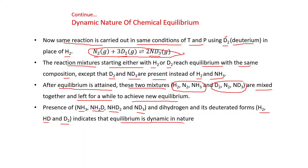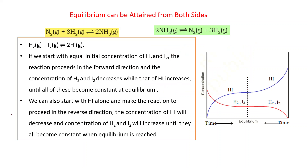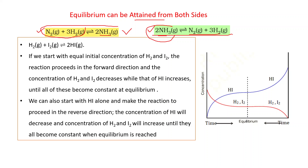Equilibrium can be attained from both sides. We have discussed that if we start from N₂ and H₂, we get NH₃. This equilibrium can also be attained if we start from the decomposition of ammonia — starting from NH₃ we again reach the same equilibrium. Whether we start from N₂ and H₂ or from NH₃, we get the same composition mixture at equilibrium.